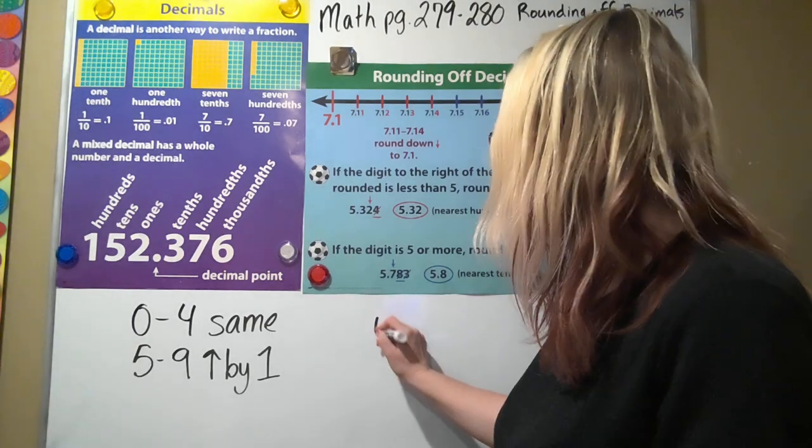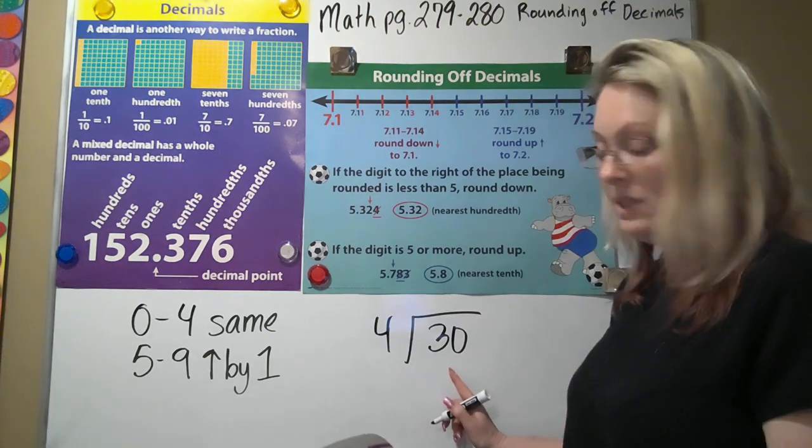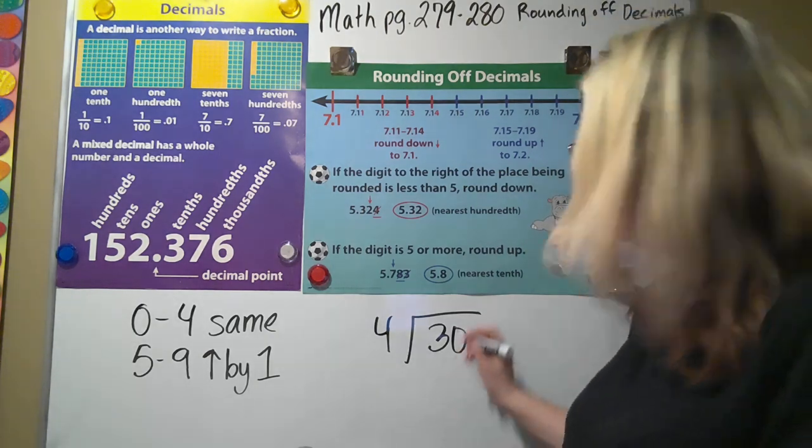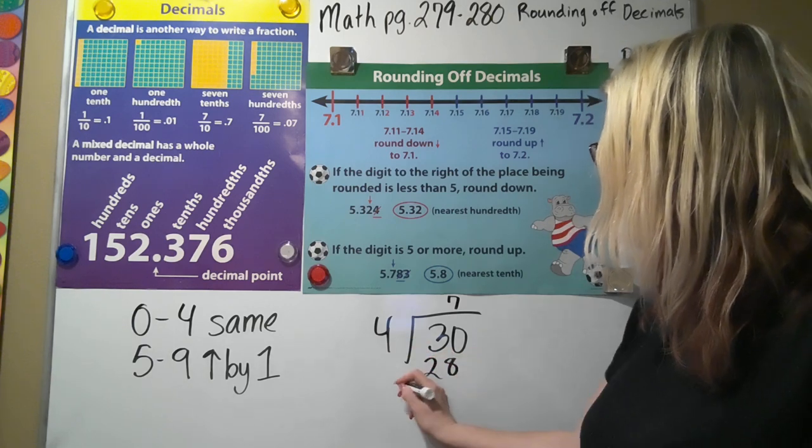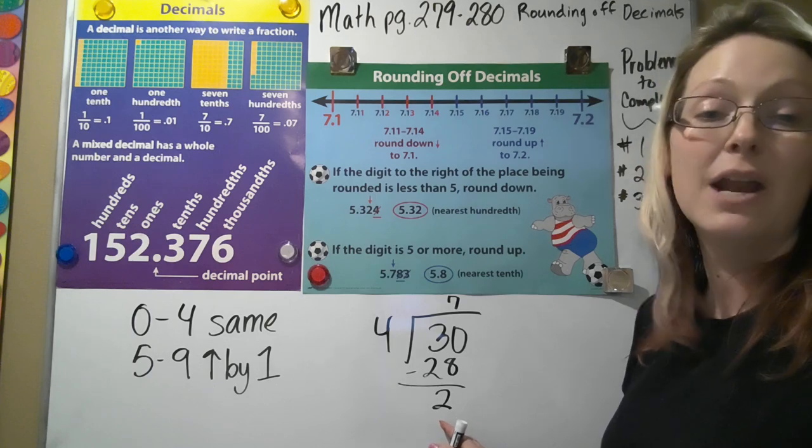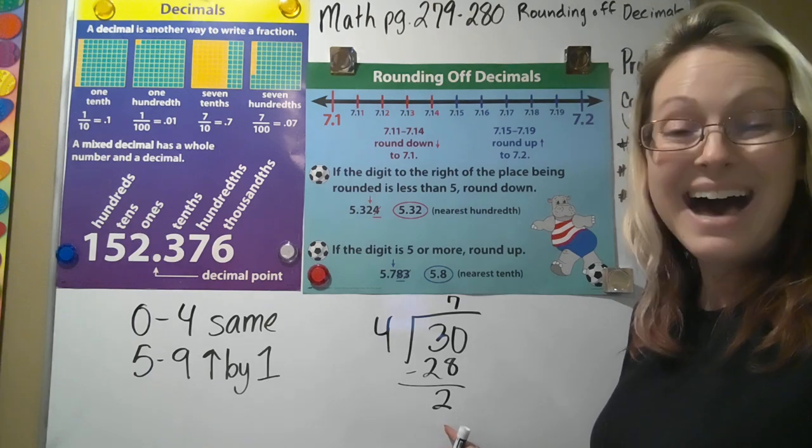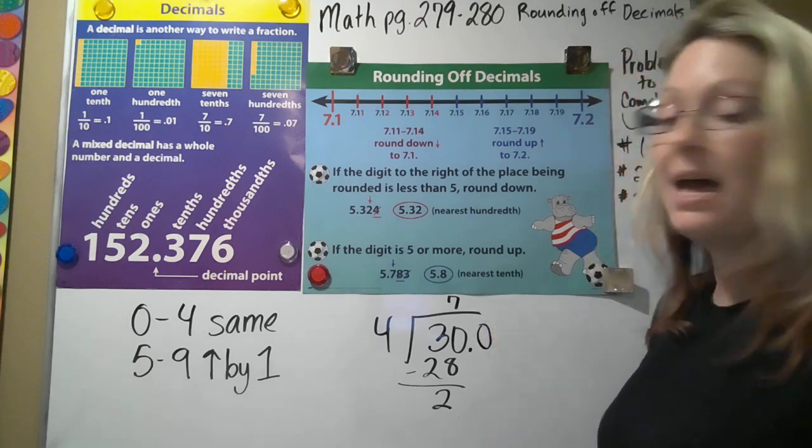Let me go over one more with you. Remember, if I have four goes into 30—I have four goes into 30. How many times? Seven times. Seven times four is 28. I subtract, I get a two. I don't want a remainder, so I want a next zero, meaning I add my decimal place and my zero.